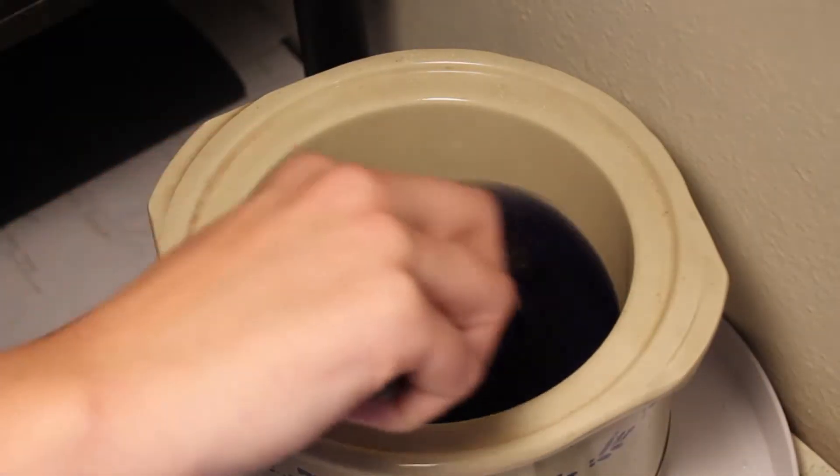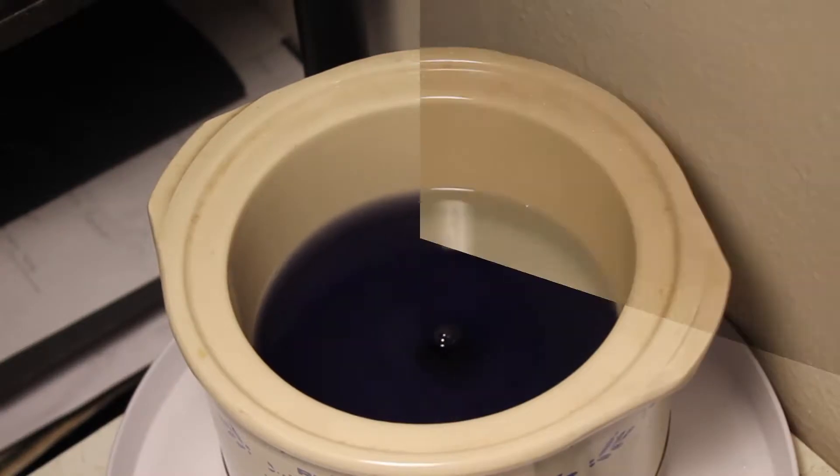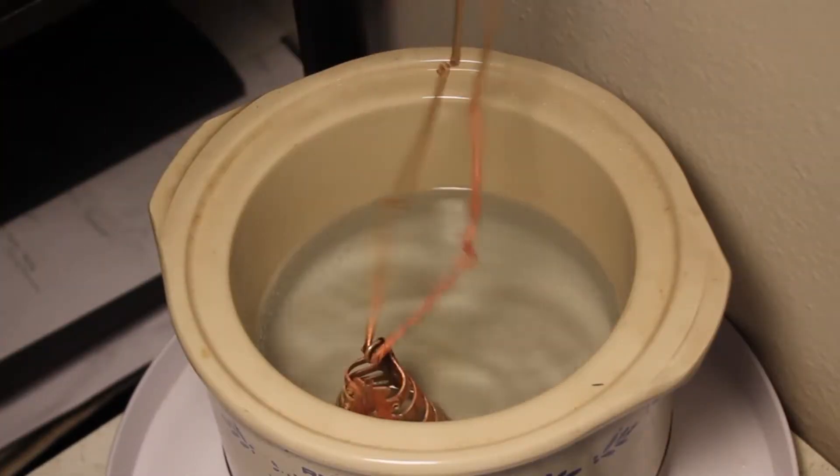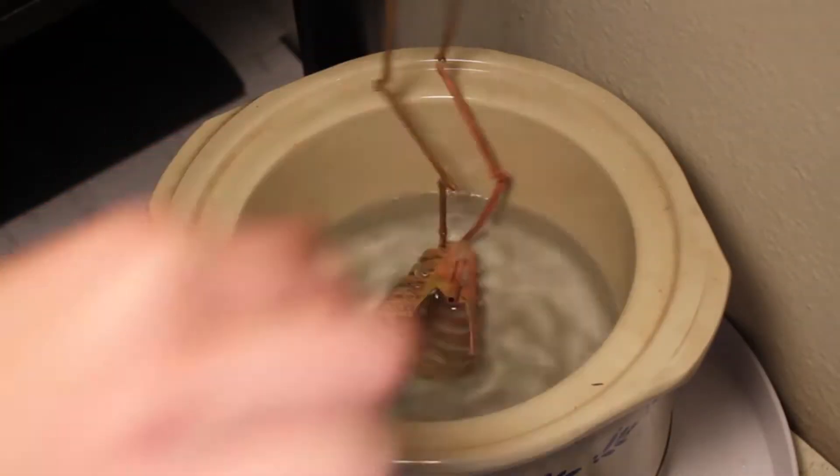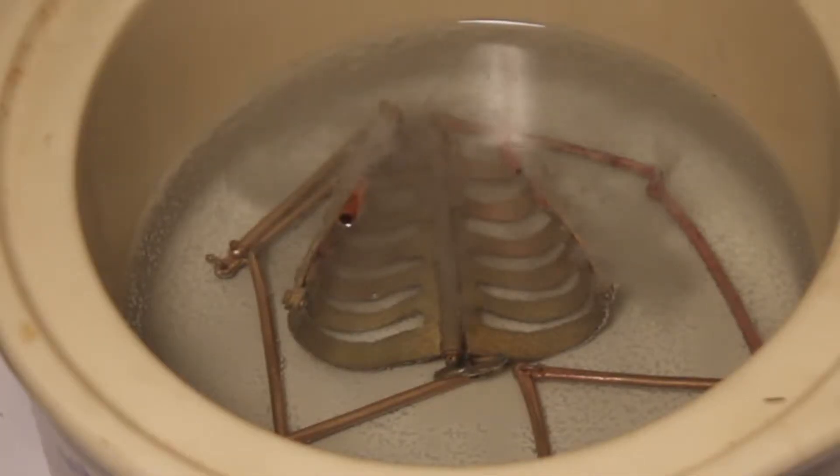As you stir and the pickle warms up, you will notice that it turns clear. When you place your piece into the hyperpickle, you will notice the hydrogen peroxide bubbles are having a chemical reaction, stripping the copper off of the brass.